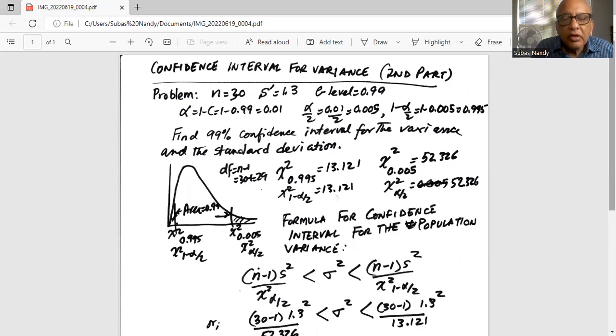Similarly, the right critical value of chi-square which has an area of 0.005 in the right tail to the right of it is chi-square 0.005.